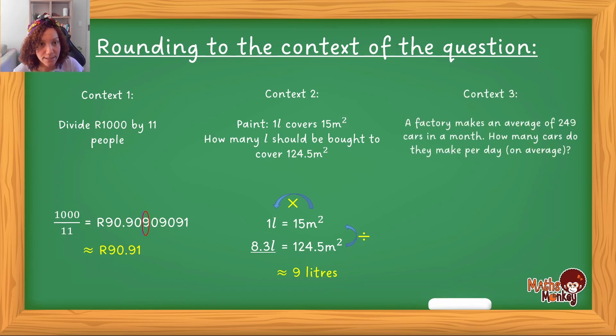Now let's show you another context, a last context. This question says a factory makes an average of 249 cards in one month. How many cards do they make per day? You would say 249 cards is how much they make in total for the month and divided by the average amount of days in a month, which is 30, and your answer is 8.3. But the question wants to know how many cars get made per day. So that means whole cars, not part of a car. If I look in this case, how many cars would actually then be made would be 8, because the 9th car is not completed. So that means in the context of this question, the 8.3 then gets rounded down to 8 cars.